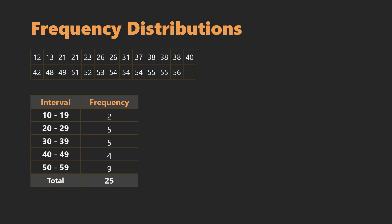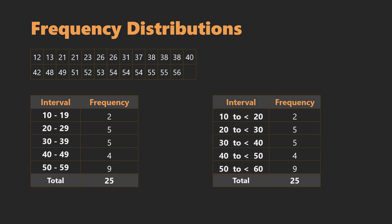For example, values like 19.5 or 29.35 will not be captured by any interval listed here. As a result, we often group the data into class intervals with open-ended upper limits such as 10 to under 20, 20 to under 30, and so on. The first interval will start at 10 and go to 19.9999, and the second interval will start at 20 and go to 29.9999. Although this second presentation is more useful for continuous data, it still works for discrete data as well.